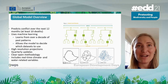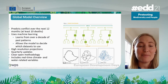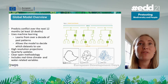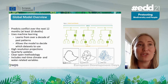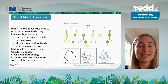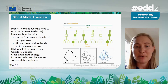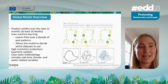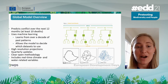To provide a brief summary of our model: we're predicting conflicts over the next 12 months, defining conflicts as at least 10 deaths. We use machine learning, learning from over a decade of past patterns, and allow the model to decide which datasets are helpful. We create high-resolution projections at the ADM-2 level — the county level in the US — with quarterly updates and a report of places to watch.